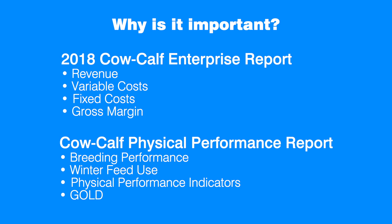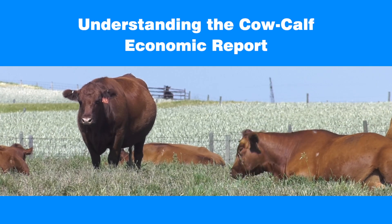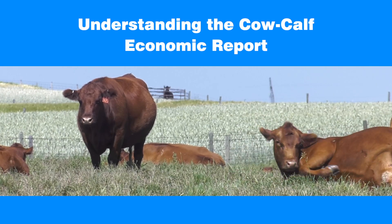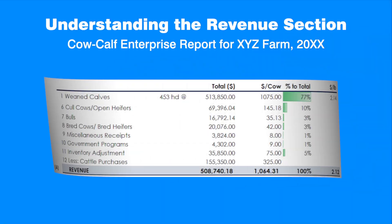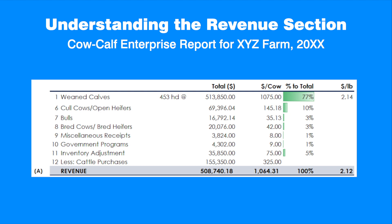We will start our overview with the economic report. The economic report consists of four sections: revenue, production costs, efficiency measures, and investment. Let's examine the revenue section using an example of the cow-calf enterprise report. The report expresses the results in total dollars, dollars per cow, percent to total, and dollars per pound. Expressing value on a unit basis is important for comparison with benchmarks as well as with market prices.